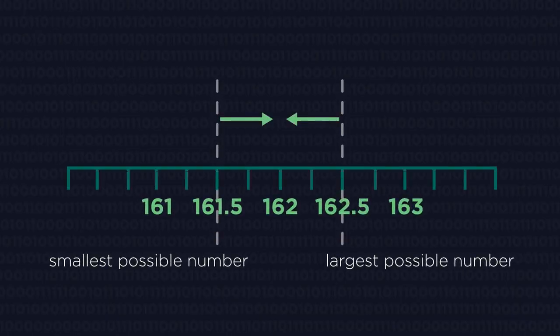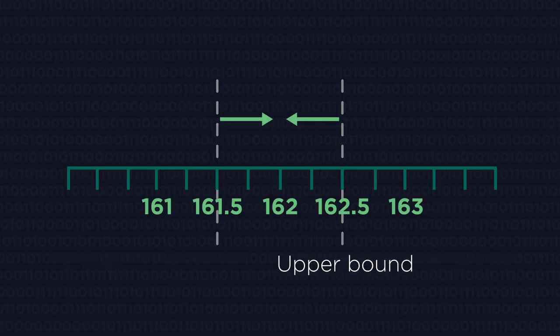There is then a group of numbers that the original measurement is somewhere between. This is called the limits of accuracy. There is a largest possible number, called the upper bound, and a lowest possible number, called the lower bound.